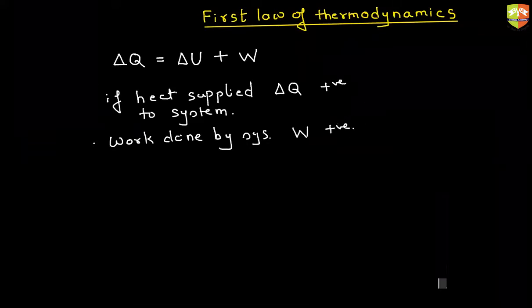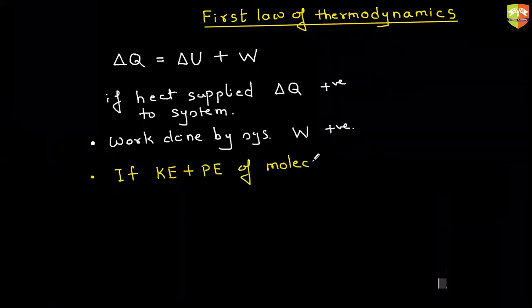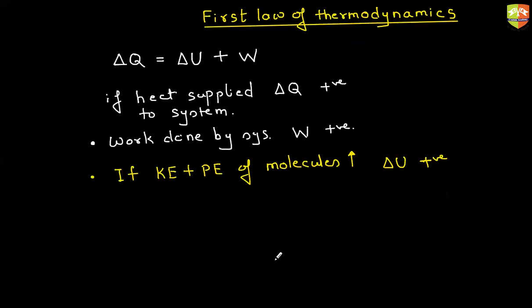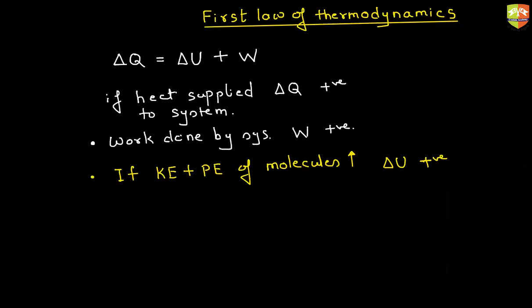And internal energy is nothing but sum of kinetic energy and potential energy. So if kinetic energy and potential energy of molecules increase, then delta U is positive. Otherwise, it is negative. Can you tell me a way to increase the kinetic energy of the system? By raising the temperature. Because kinetic energy of the molecule is in a way temperature only. It represents temperature.